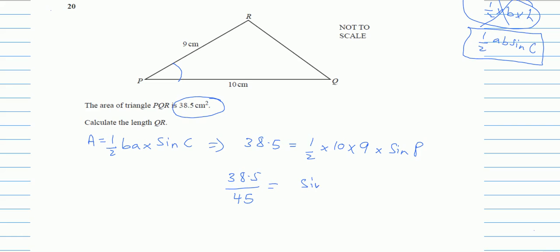So it will be 38.5 over 45 equals sine P. Sine on the other hand will become inverse.